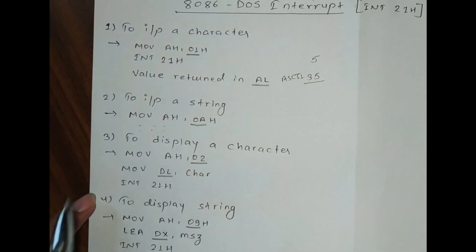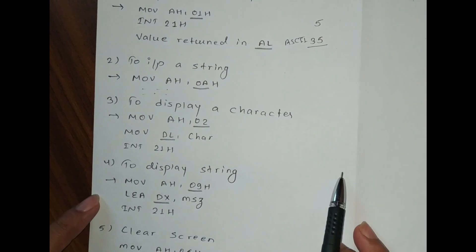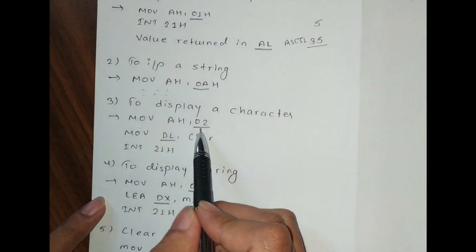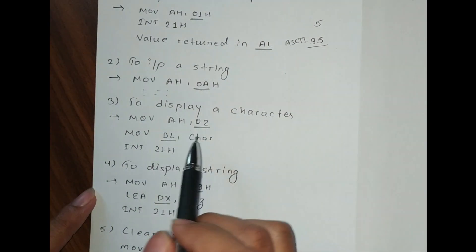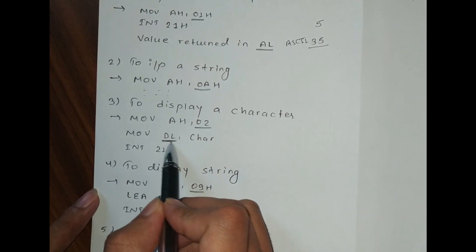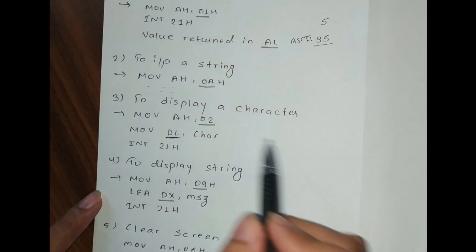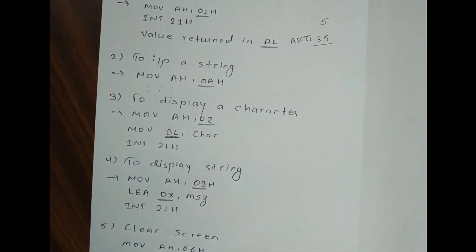To display a character on the monitor, you have to keep 02H in the AH register and you have to place the character in the DL register. So the character present in the DL register will be printed on the screen.